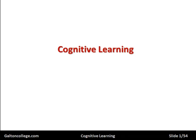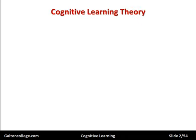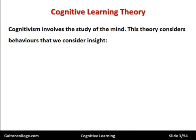This class deals with cognitive learning. Cognitive learning deals with the mind. It's different to behaviouralism. Behaviouralism was a situation where Pavlov's dog heard the bell and salivated — the dog anticipated food.